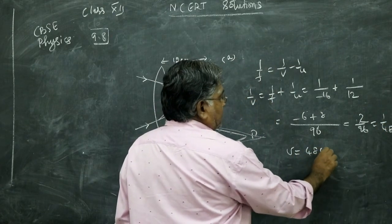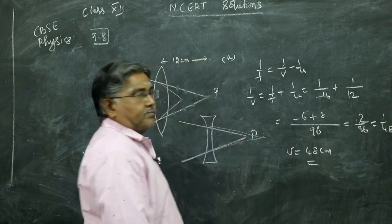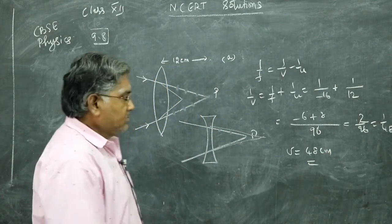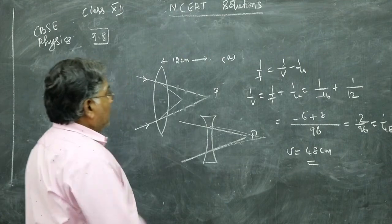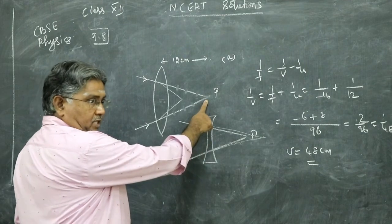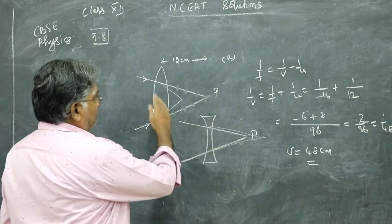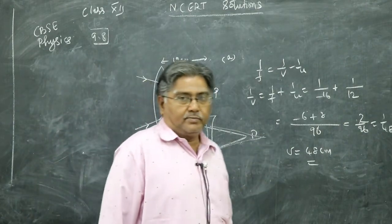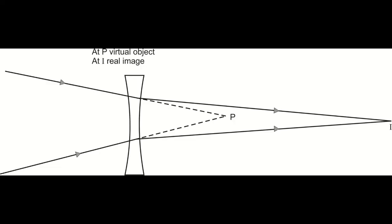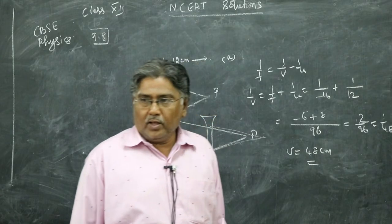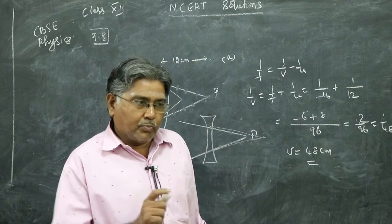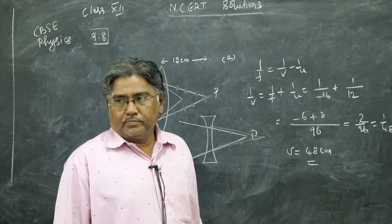That means the image is real to the right side of the concave lens. Previous case also the image is real, formed to the right side. Distances are different. So you will have to put the proper sign convention, you will get the answer.